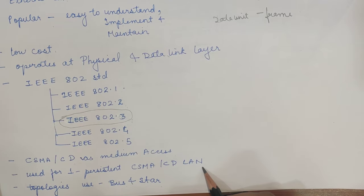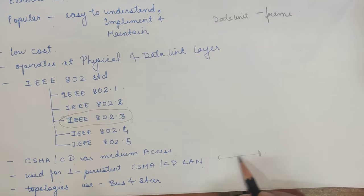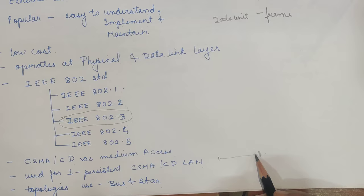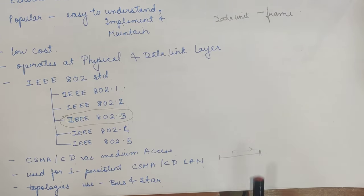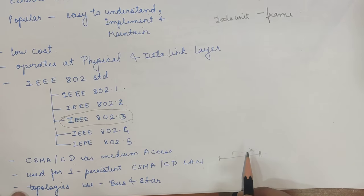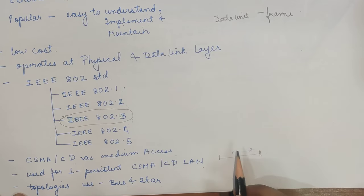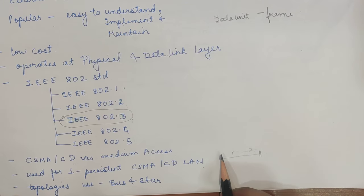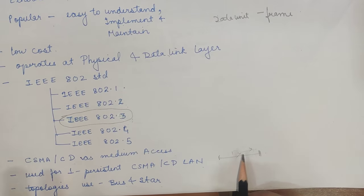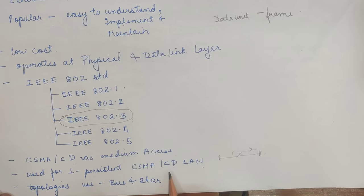In this protocol, when one station wants to send data to another station, it first listens and senses the medium. When the medium is idle, the data is transferred. When the medium is not empty, it waits for the medium to become empty. When two different stations want to send data at the same time, they sense the medium and transfer data, but there is a chance of collision. To avoid that collision, the frame immediately notifies the respective station that a collision is happening, so it terminates the transmission. The procedure is then repeated again. Hence, it is called one-persistent CSMA/CD.